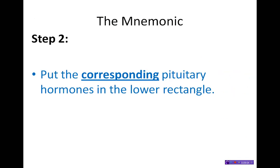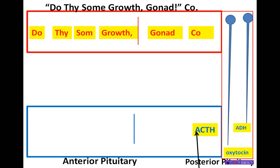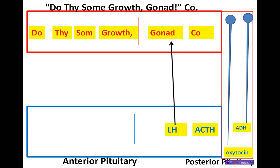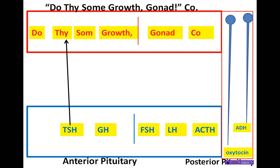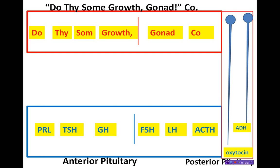Step two: put the corresponding pituitary hormones in the lower rectangle, and do it from the right. I'm assuming most people know the anterior pituitary hormones and can correlate them — for example, ACTH correlates with corticotropin-releasing hormone, and LH and FSH both correspond with gonadotropin-releasing hormone. The order of LH and FSH doesn't matter so much in our mnemonic, but they need to be there. Then draw your horizontal line. Growth hormone obviously relates to growth hormone-releasing hormone, somatostatin connects to nothing at this point, TSH goes with thyrotropin-releasing hormone, and prolactin is placed under dopamine. These don't have to be perfectly underneath, but they need to be in this order.